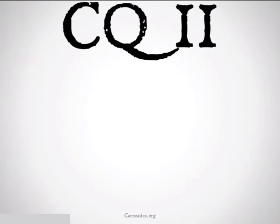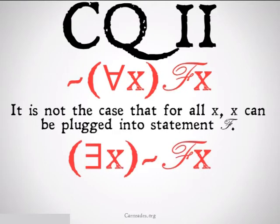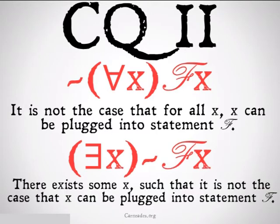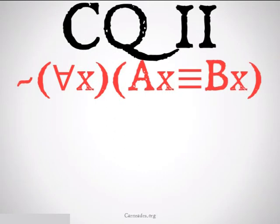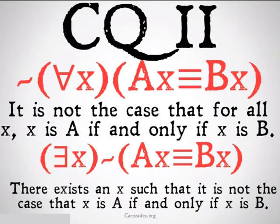Change of quantifier number two: we go from it's not the case that for all x, x is F, to there exists some x such that it's not the case that x is F. For example: it's not the case that for all x, x being A is equivalent to x being B. Therefore, there exists some x such that it is not the case that if and only if x is A, then x is B.